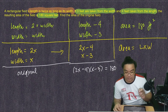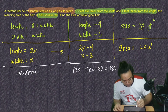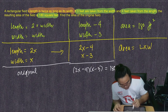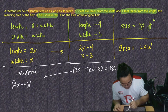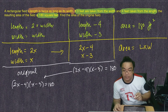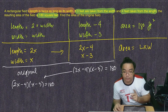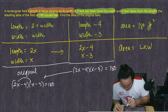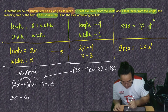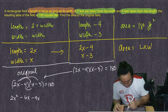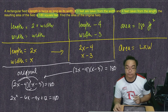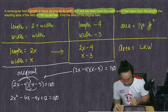To solve this quadratic equation we first distribute. We have (2x − 4)(x − 3) = 180. In order to solve quadratic equations we have to equate to zero, so we distribute: 2x times x is 2x squared, 2x times negative 3 is negative 6x, negative 4 times x is negative 4x, and negative 4 times negative 3 is positive 12, all equal to 180.